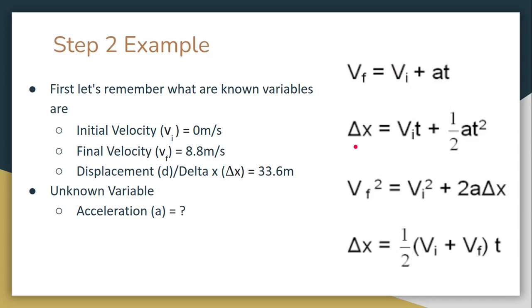Let's look at the second one. Delta x, we know. Vi, we know. T, we don't know. So we can't have two unknown variables. We can't use that one.